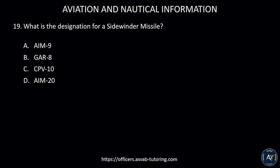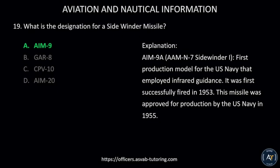Number nineteen: What is the designation for a Sidewinder missile? A) AIM-9, B) GAR-8, C) CPV-10, or D) AIM-20. The correct answer is A, AIM-9. The AIM-9A, or AAN-7 Sidewinder 1, is the first production model for the U.S. Navy that employed infrared guidance. It was first successfully fired in 1953 and approved for production by the U.S. Navy in 1955.